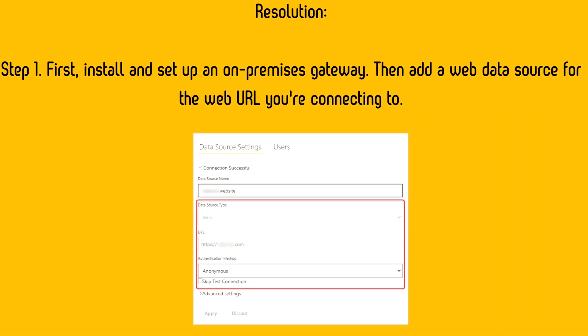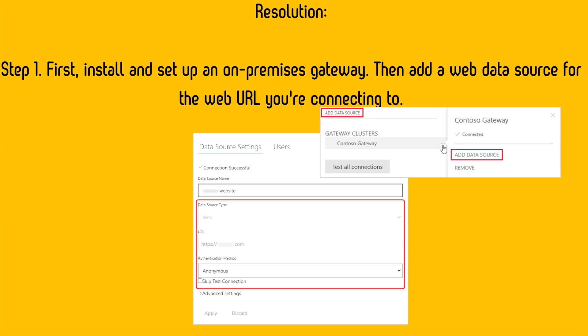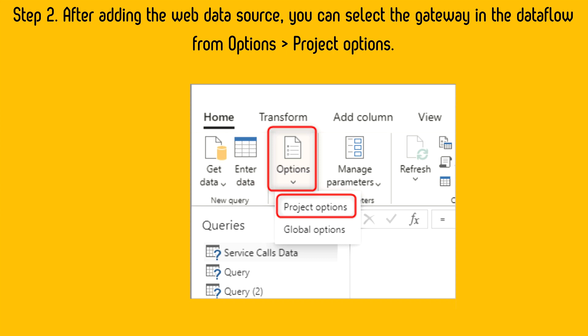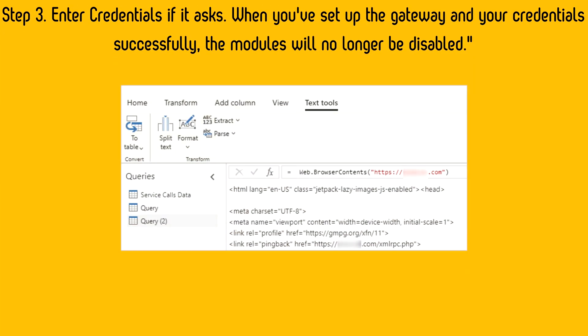To resolve the disabled module error, go to your Power BI service under the data source settings for your gateway. On the left-hand side of your data gateway, click the button to add a data source and add it as a website or web source. Add your credentials — no authentication is required. After adding the web data source, select the gateway in the data flow options, go to project options, and enter credentials if prompted. Once the gateway and credentials are set up successfully, the modules will no longer be disabled.